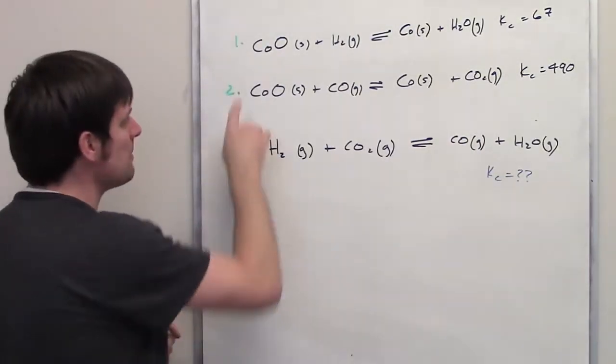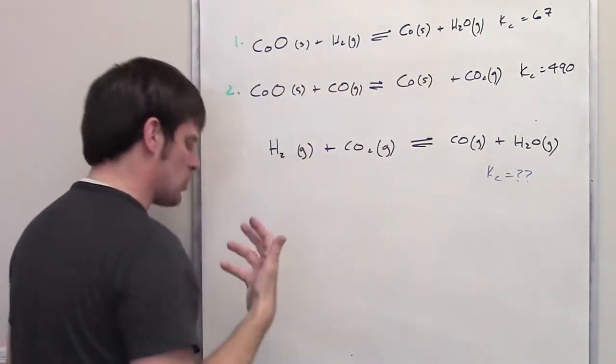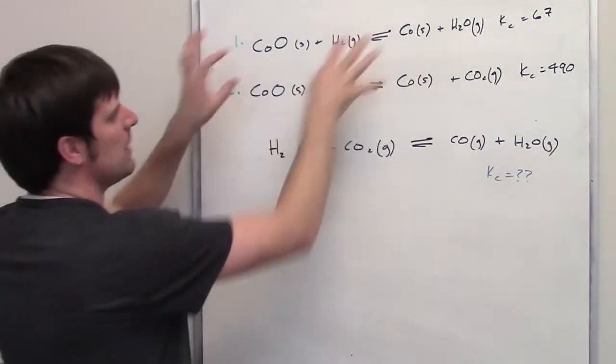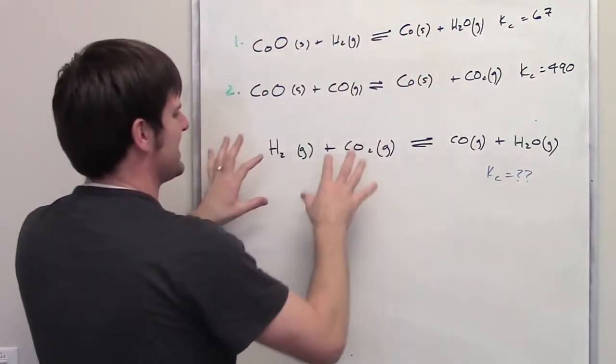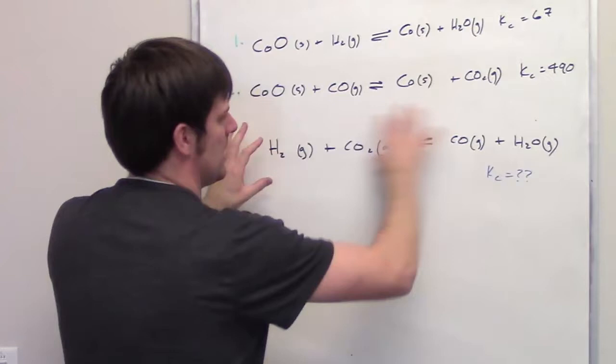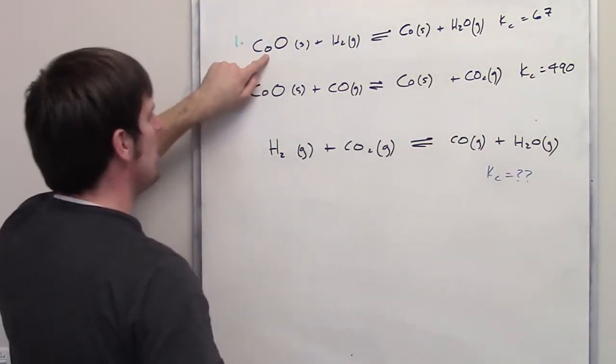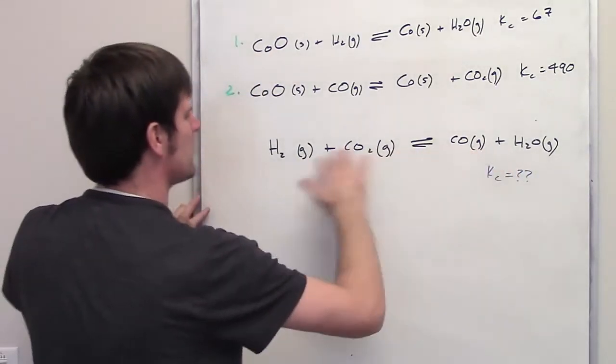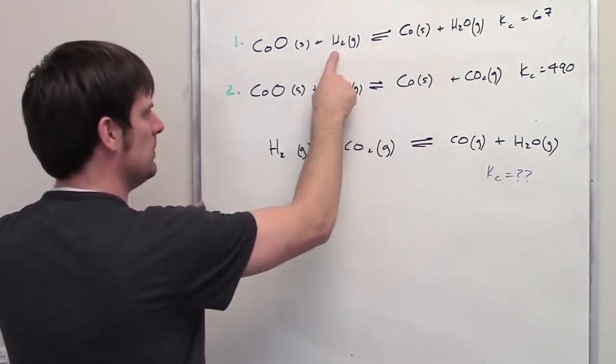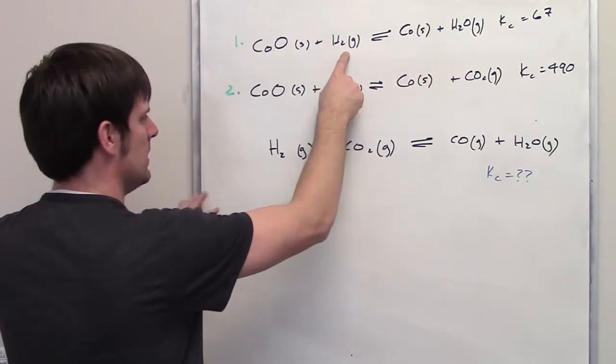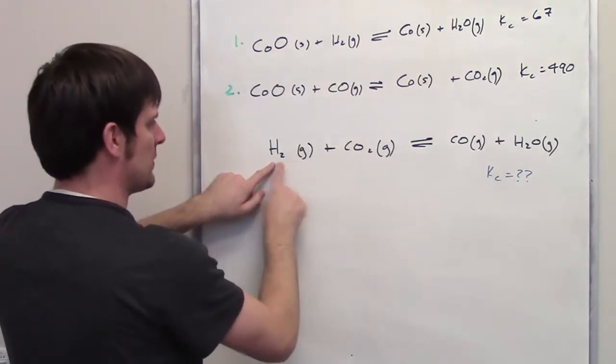So what I'm going to do is I'm going to begin by looking at equation number 1. I'm going to try and see if there are parts or elements of it that are the same or more similar to the overall equation we're trying to get to down here. I've got this CoO, cobalt oxide. I don't see that anywhere in this equation down here. I have H2. It appears on the left side of this equation, and I see it appearing on the left side of my overall equation.